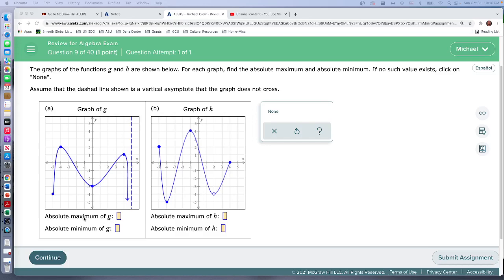They want the absolute maximum of G, the value of G, so they're looking for the y-value. We can see right here y equals 2 is the highest value.